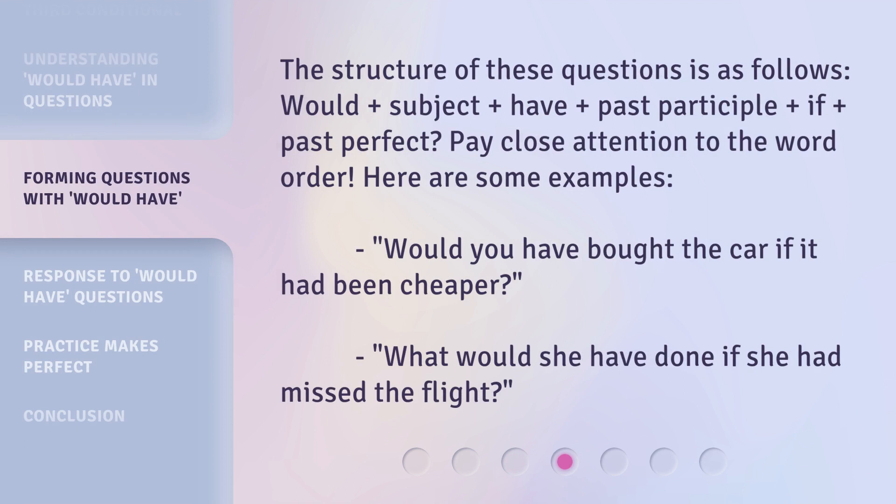The structure of these questions is as follows: 'Would' plus subject plus 'have' plus past participle plus 'if' plus past perfect. Pay close attention to the word order. Here are some examples: 'Would you have bought the car if it had been cheaper?' and 'What would she have done if she had missed the flight?'